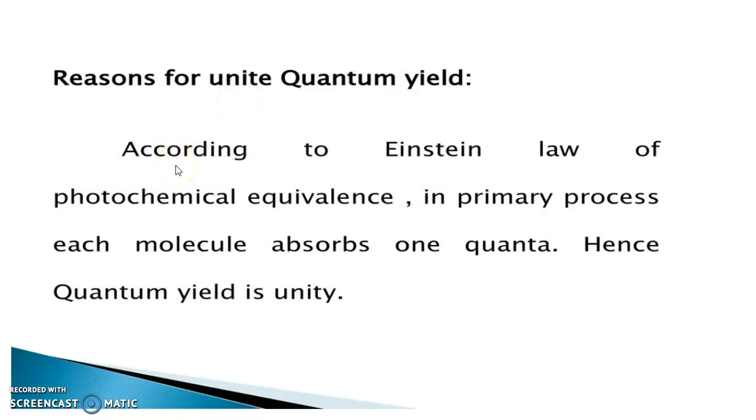There will be a value of quantum yield, that is unity. According to Einstein's law of photochemical equivalence, in a primary process, each molecule will absorb one quanta of energy. So, hence the quantum yield should be unity. That is, if there are 100 molecules in a sample, it will absorb 100 quanta of energy. So, number of molecules is 100 and quanta of energy absorbed is 100. 100 divided by 100 will give you 1. So, actually it should be 1. But, it is not happening. It will vary.